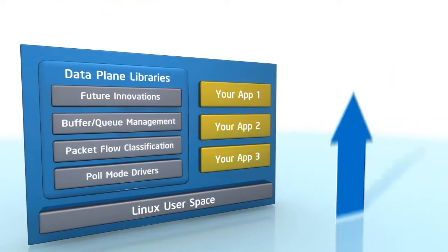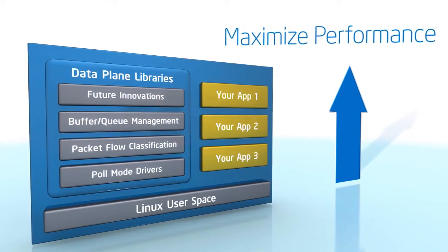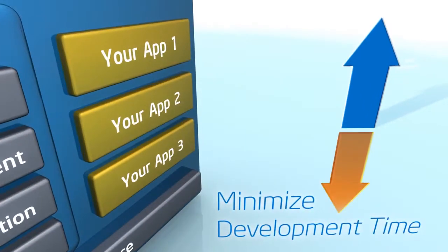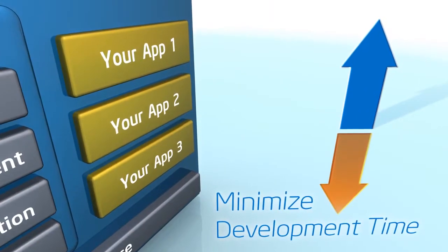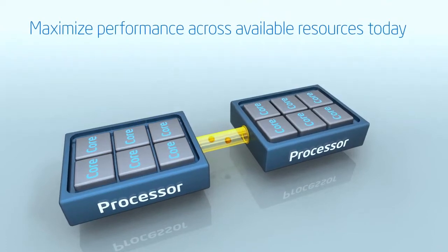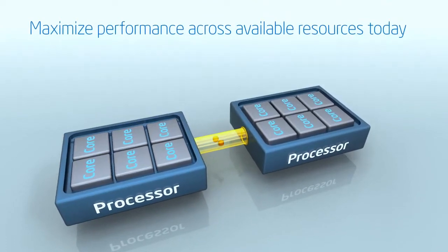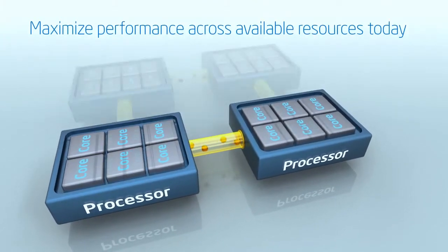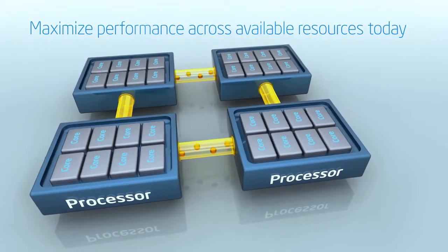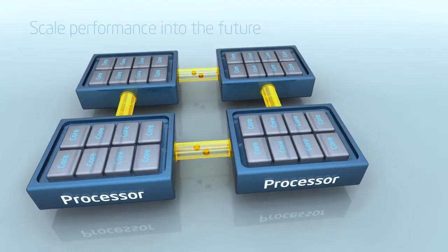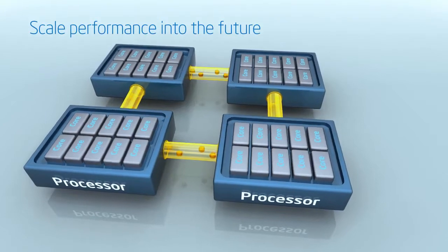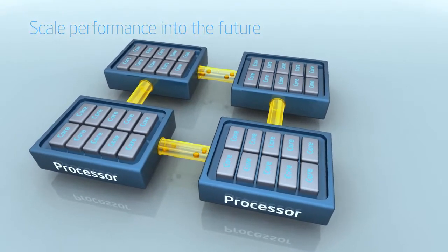Using the kit, engineers can maximize packet throughput and communication workload performance while minimizing development time. The kit enables developers to easily scale packet processing tasks across available processors and cores, and they can further scale performance as future Intel platforms include even more cores and innovations.